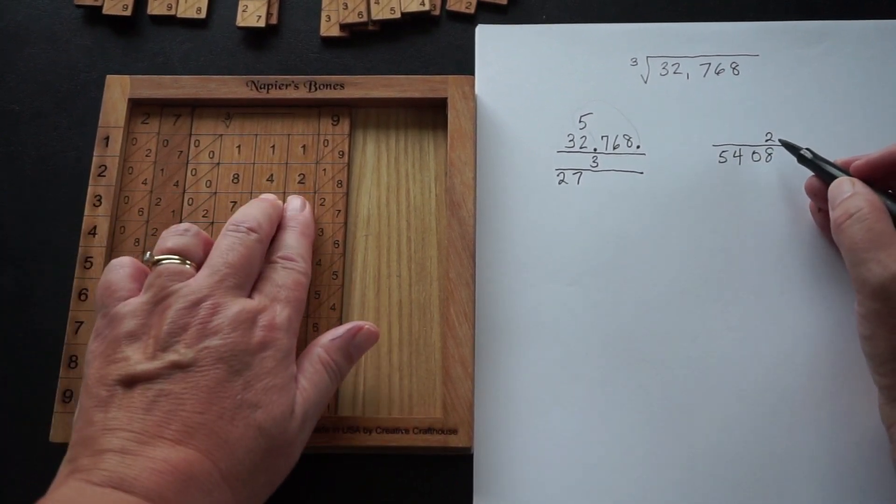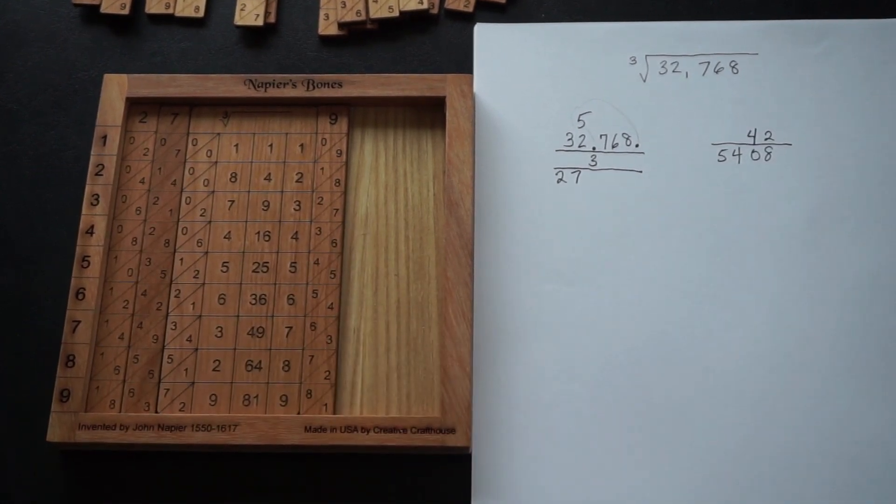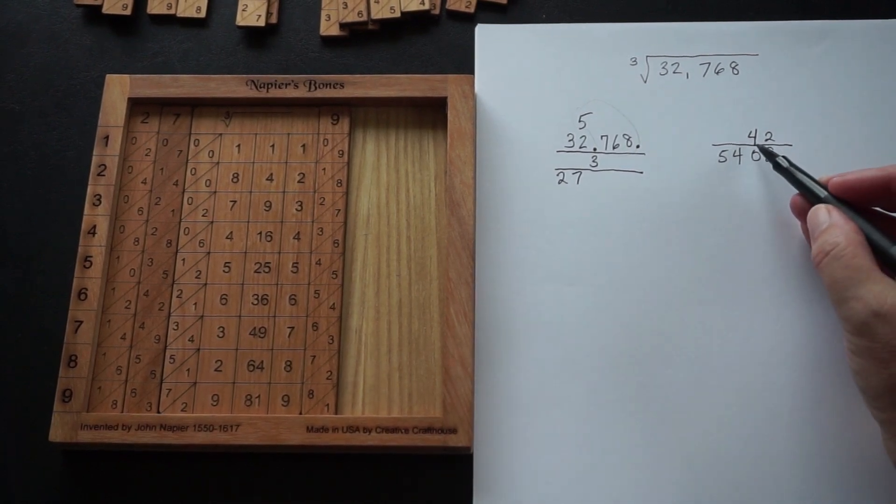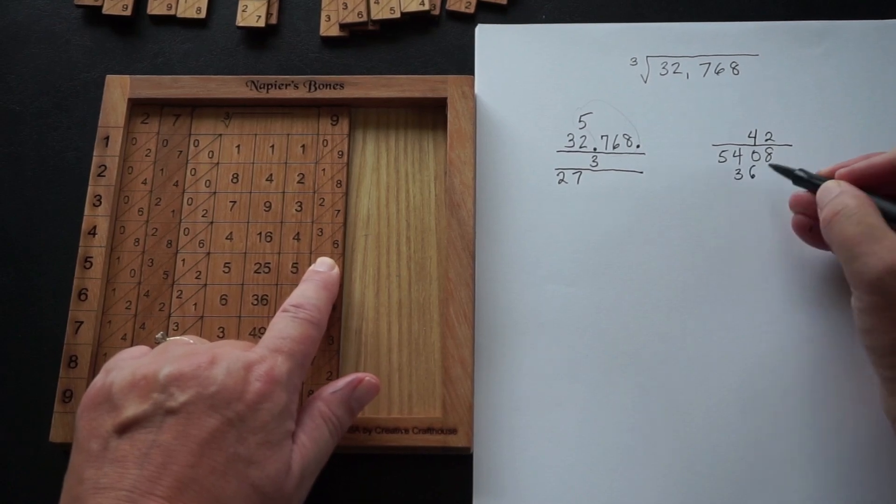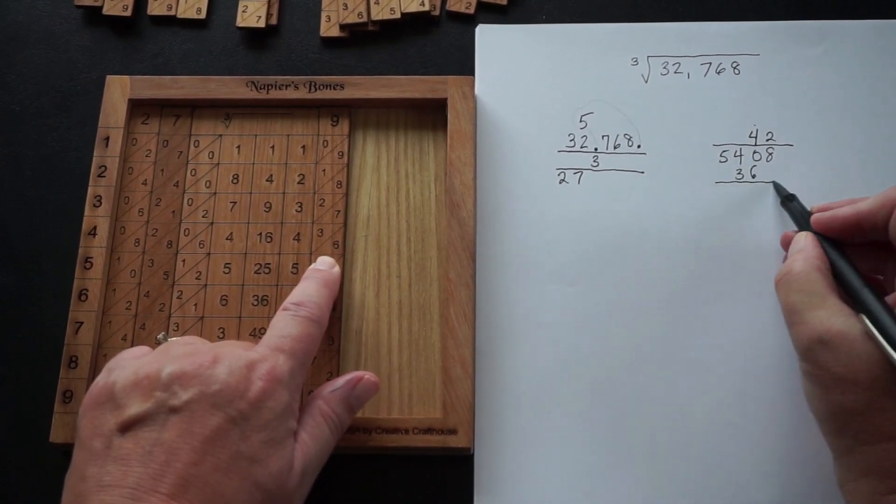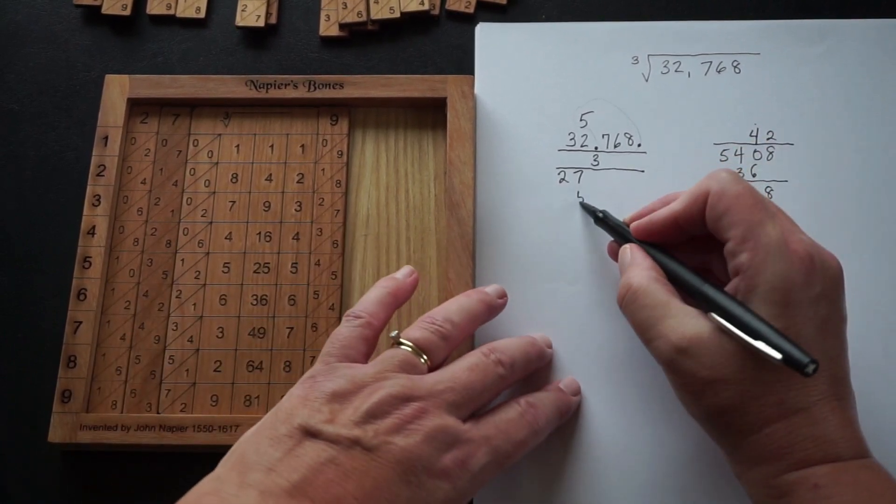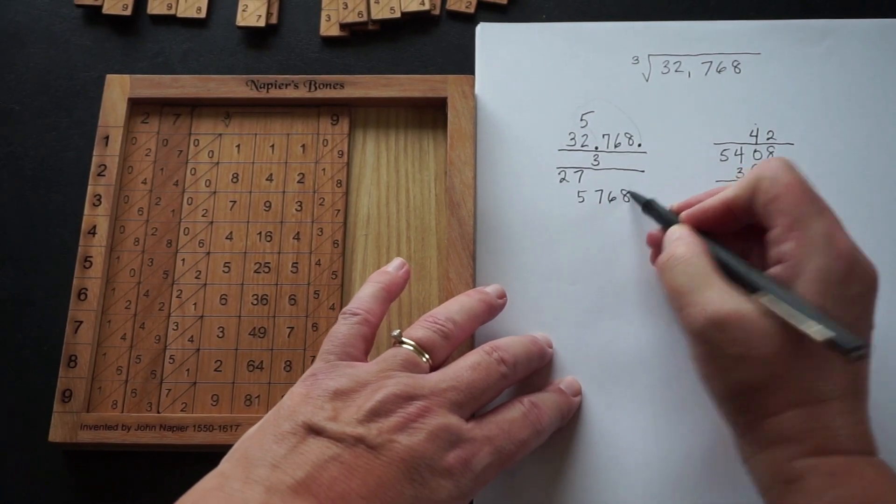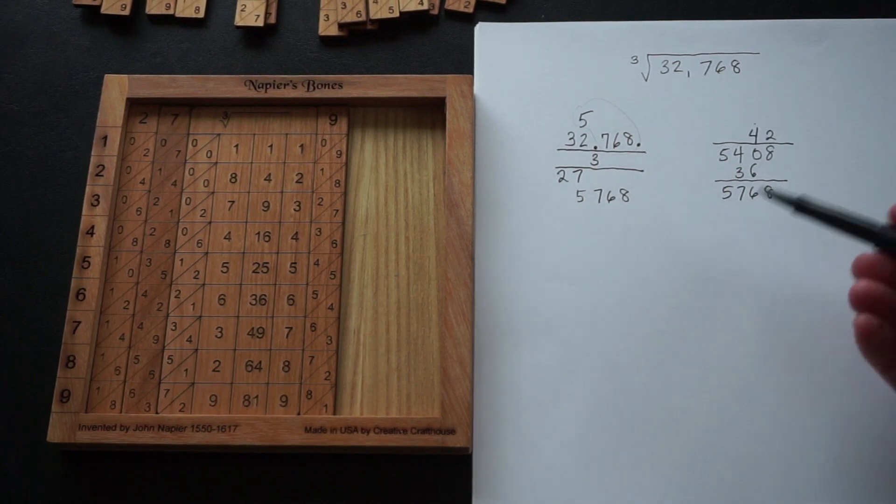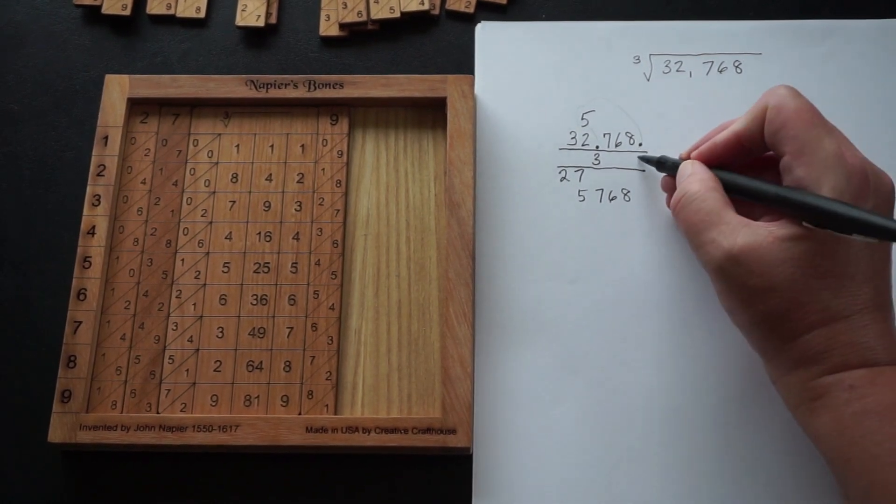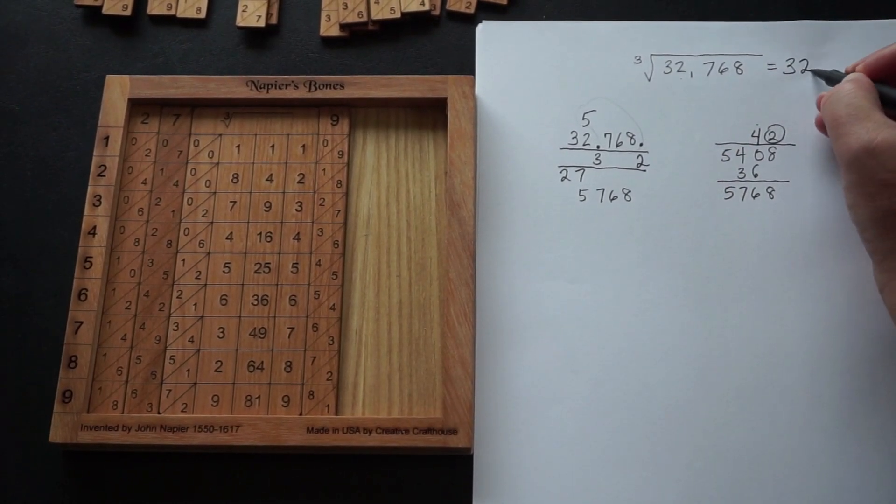We augment the two by its square. Two squared is four. And then we multiply on the right-hand side by the four. Four times nine is 36. We make sure that the ones place is under what we were multiplying by. We add, and we come up with exactly what we were looking for, because these numbers are perfect cubes. I set it up that way. And we find that our answer is that the cube root of 32,768 is 32.